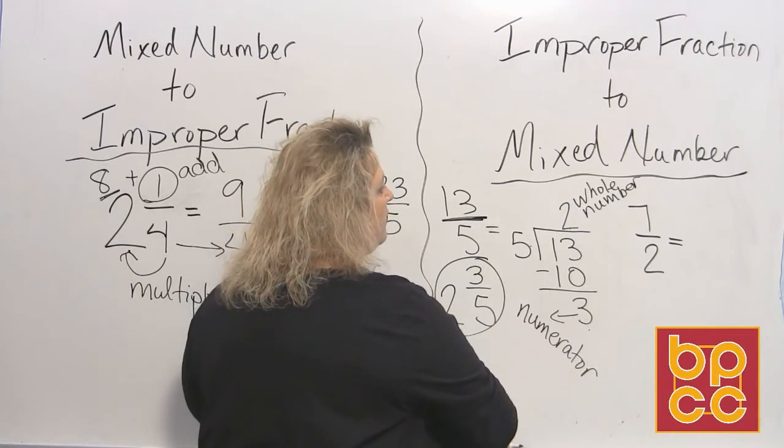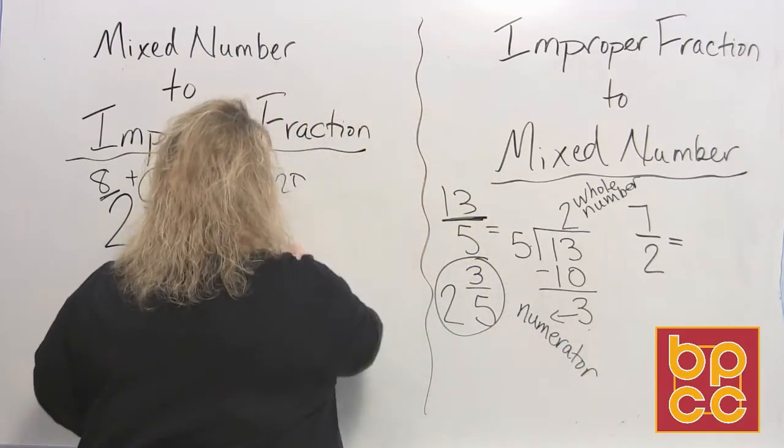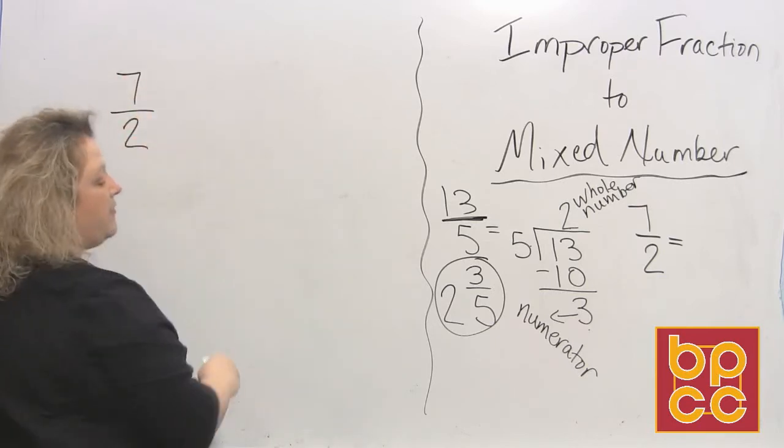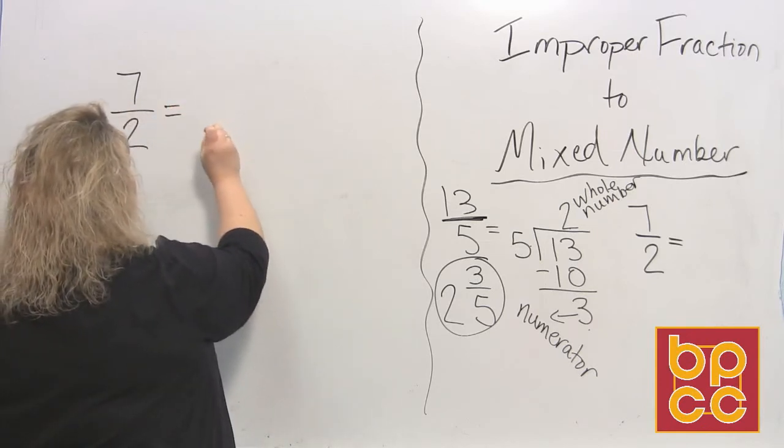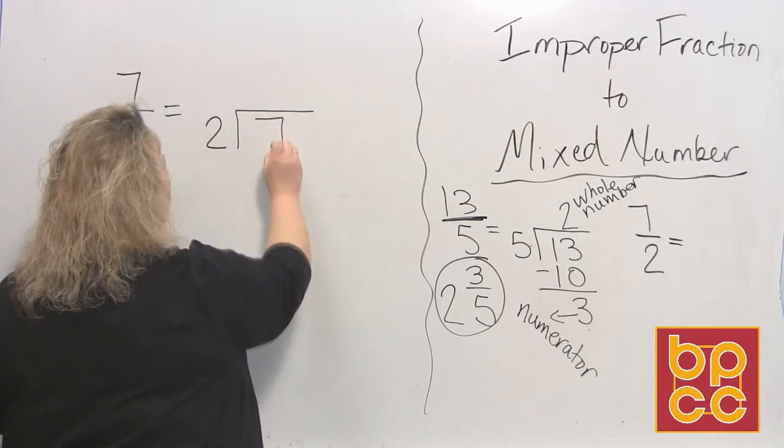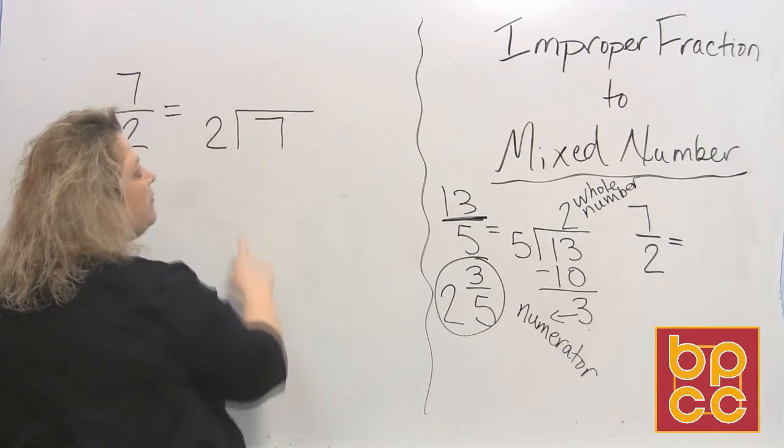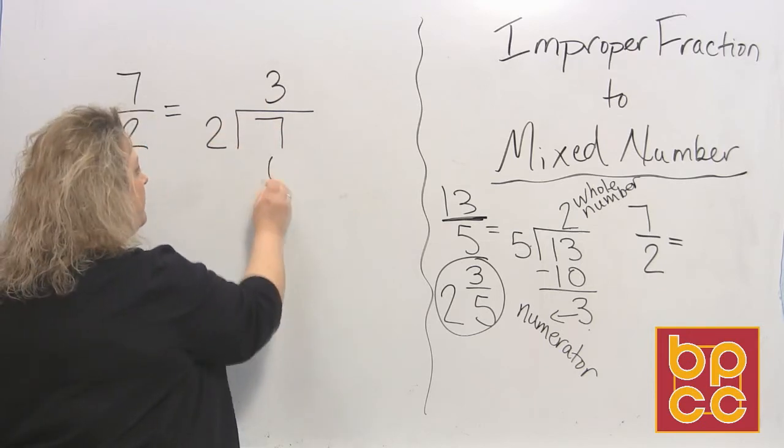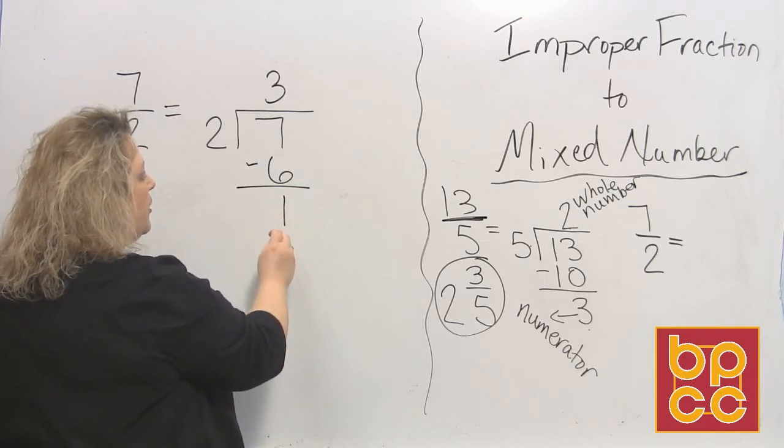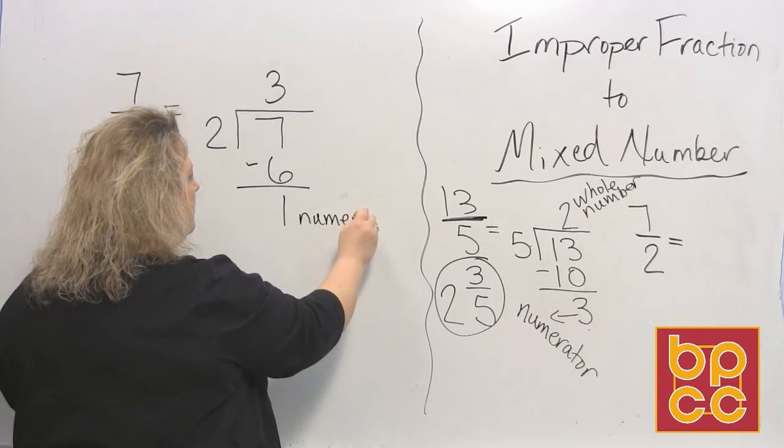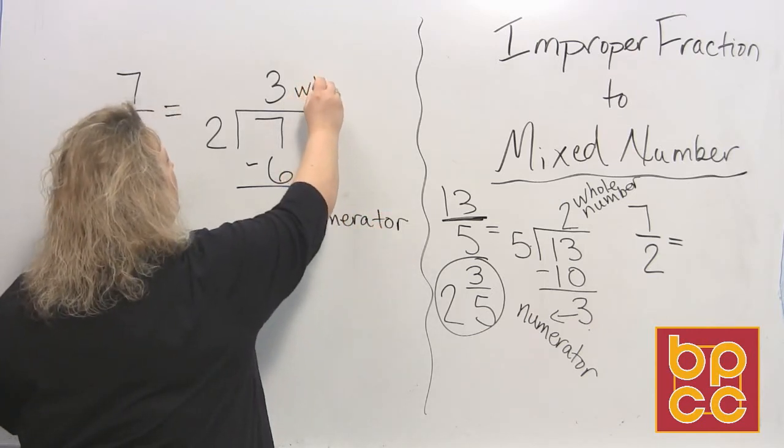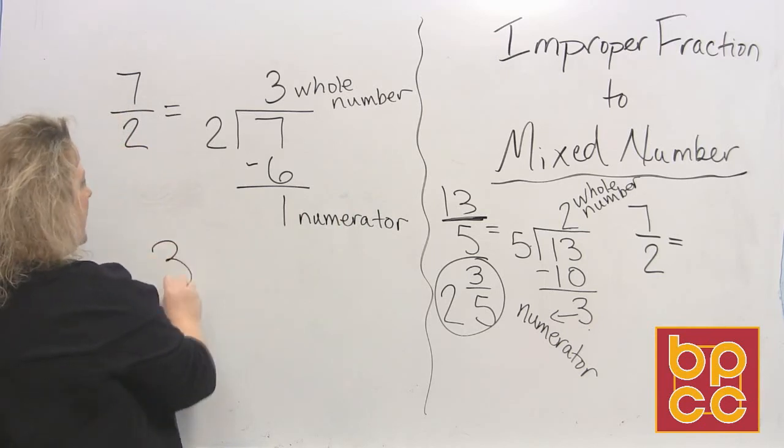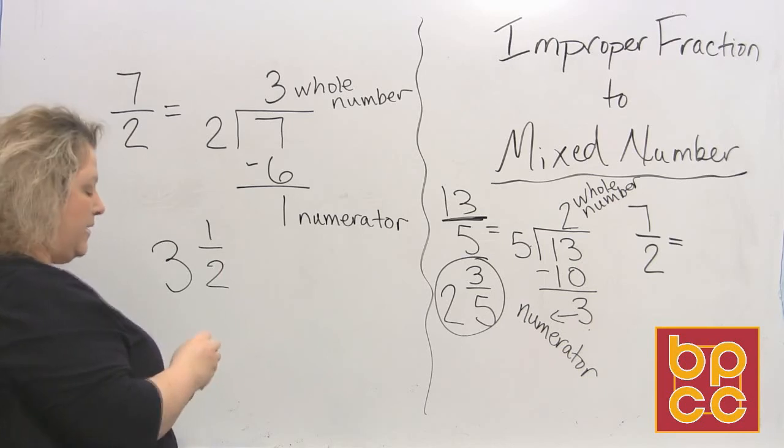So now let's do the other one. We have the fraction 7 halves. That means 7 divided into 2 parts. So we're going to take our denominator goes outside, the numerator goes inside, and you divide. How many times does 2 divide into 7? 3 times. And then we multiply. 3 times 2 makes 6. And then we're going to subtract, and that leaves us 1. So this is our numerator. The 3 is our whole number. So our mixed number will look like this. 3 and 1 half. The denominator will stay the same no matter what it is.